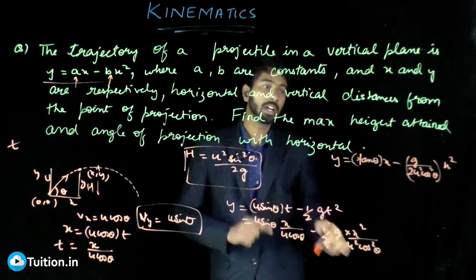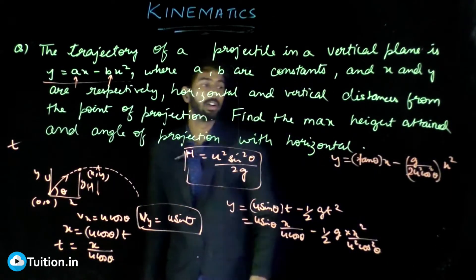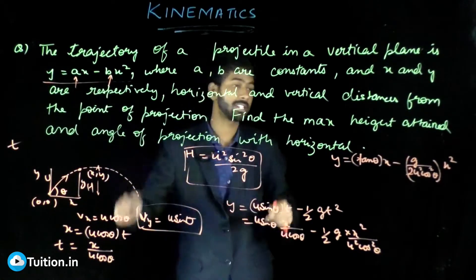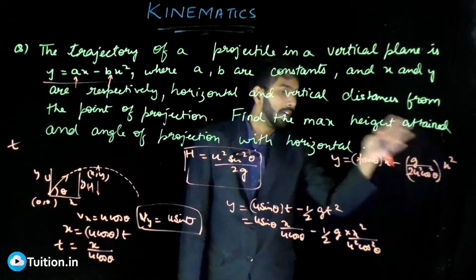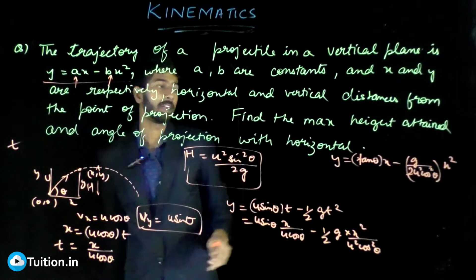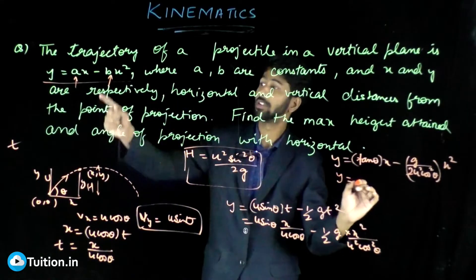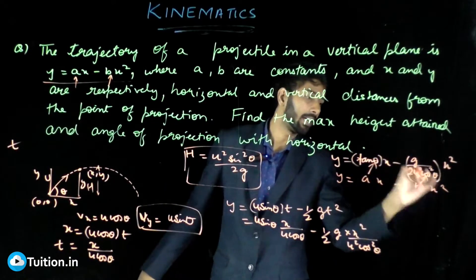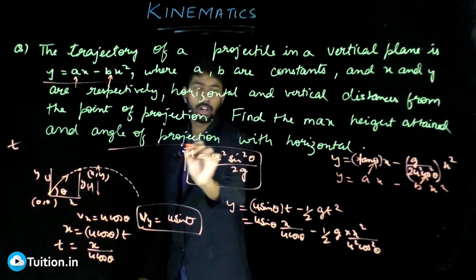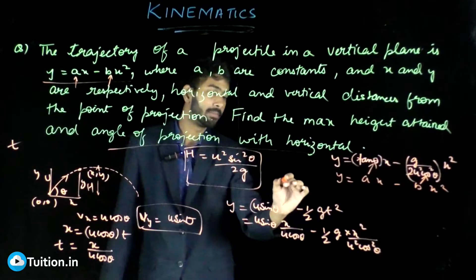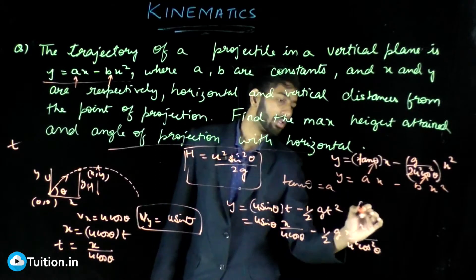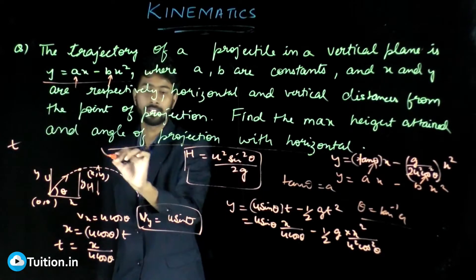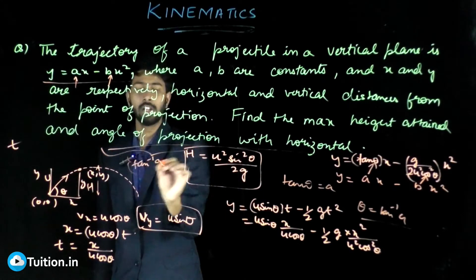It's advisable to remember this parabolic equation for projectile motion, because in direct questions like this you won't have time to derive it — you can quickly compare terms and get the answer. The given equation is ax − bx², so comparing: a = tan θ, which gives the angle of projection as θ = tan⁻¹(a).